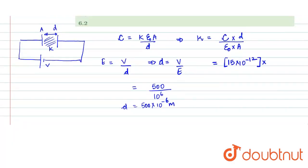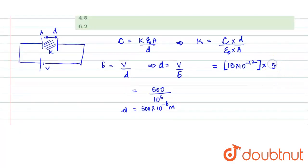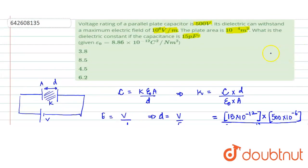Divided by epsilon naught into A. Epsilon value is given to us in the problem as 8.86 × 10^-12 into cross section area, which is 10^-4 meter square.